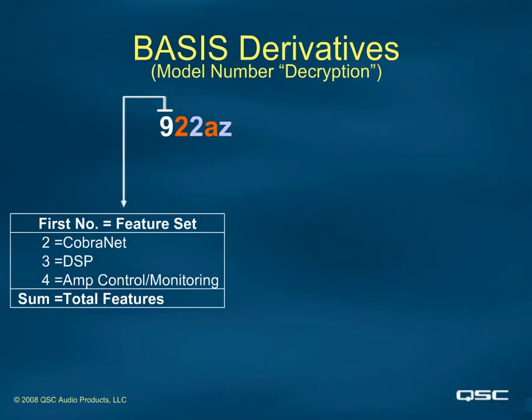A two in this location means it has CobraNet, a three is DSP, and a four means it has amplifier control and monitoring and therefore data ports. It is the sum of these numbers which gives you the different model series. Like BMW or Mercedes, the 500 series has more features than the 300 series, and the 900 series has the most features of all.